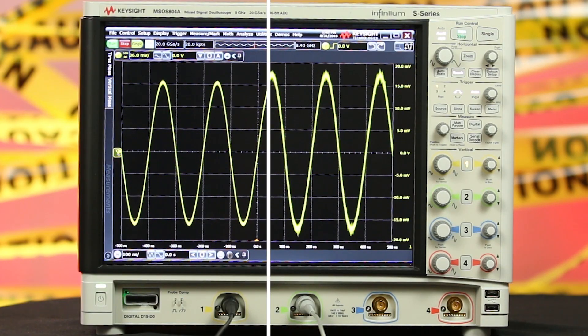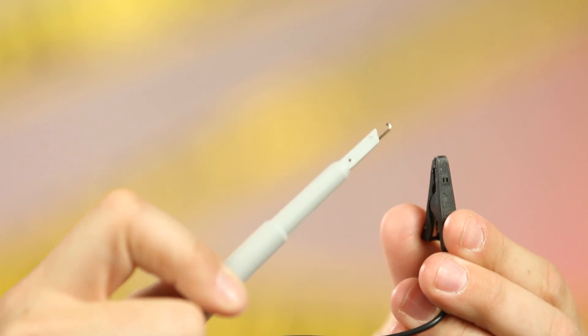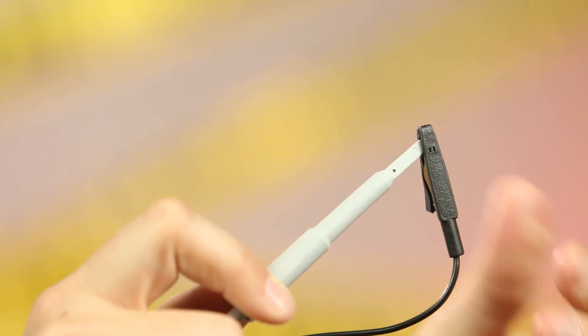The moral of the story here is always use the lowest attenuation ratio possible in an effort to introduce less noise into the system. You can see what a big difference it makes here by looking at the baseline noise of each of these probes. To do this, you simply hook them up and connect the ground lead to the probe tip.